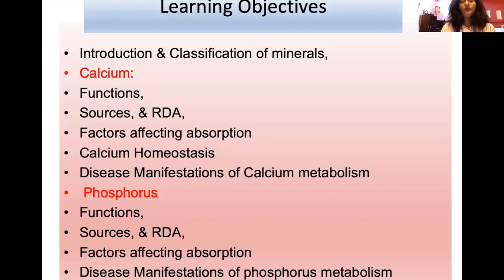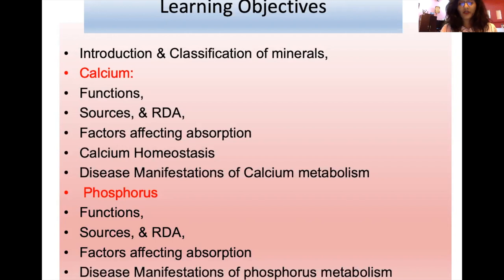After the introduction of minerals, the main topic of today's lecture is calcium and phosphorus. For calcium, we will study its functions, sources, recommended daily allowance, factors affecting absorption, and calcium homeostasis, along with manifestations of calcium metabolism. Since calcium and phosphorus are interrelated, phosphorus will also be covered under functions, sources, RDA, factors affecting absorption, and manifestations of phosphorus metabolism.